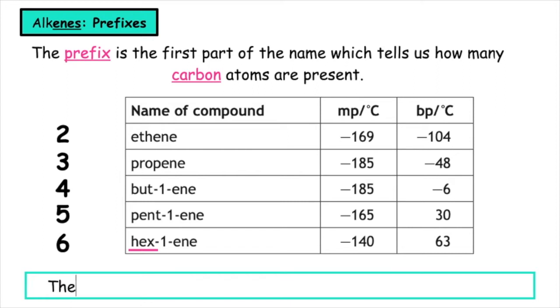The number in the middle of the name states the position of the carbon to carbon double bond within the longest chain.